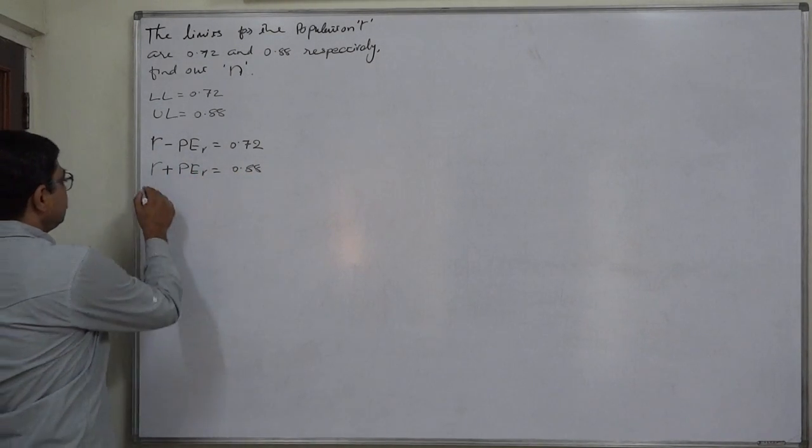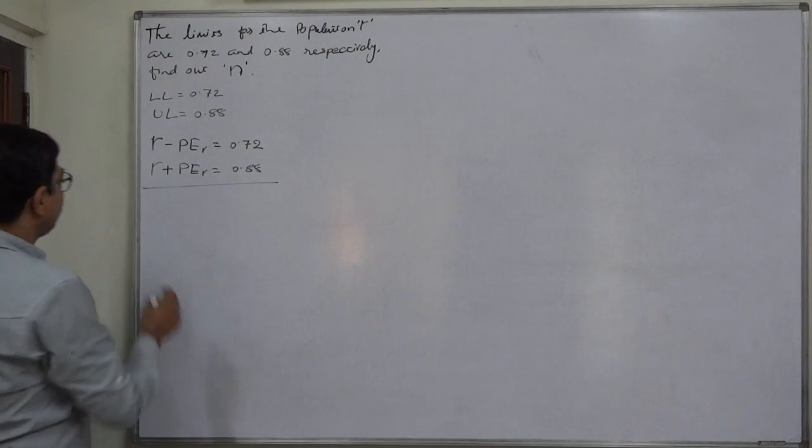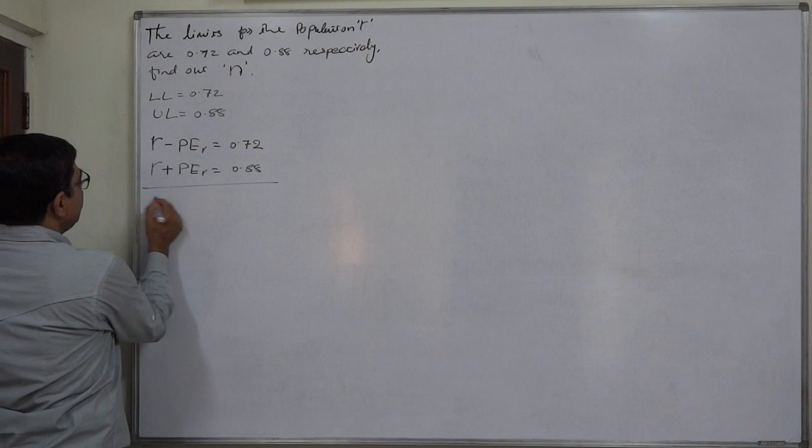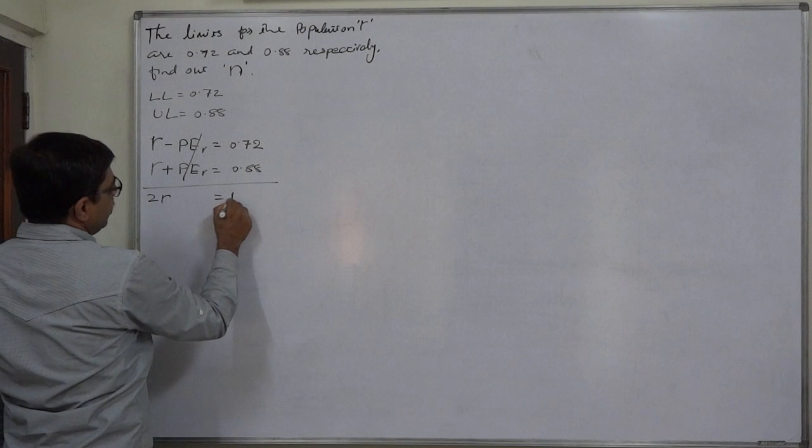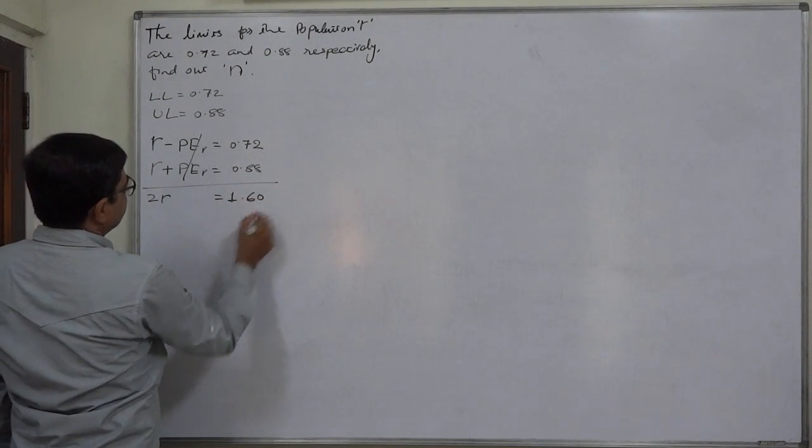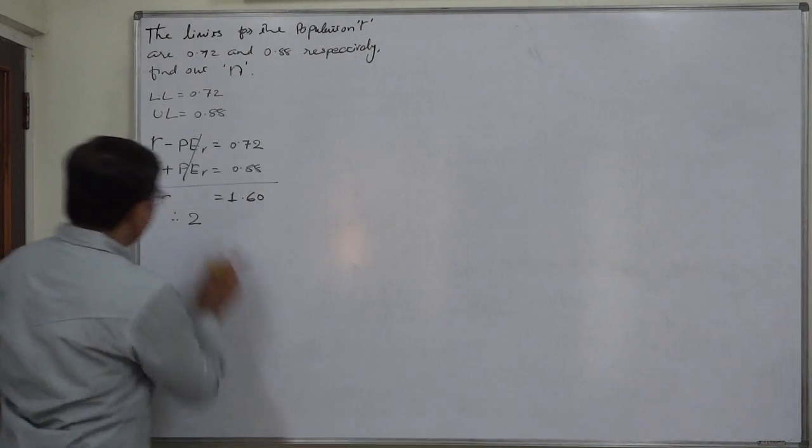So this is some kind of equations. If we add these two equations, the effect will be probable error negative and positive will be canceled equals to 1.6, so ultimately the coefficient of correlation comes to 0.8.